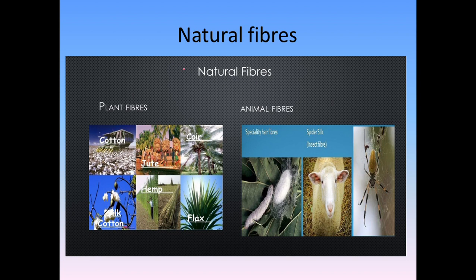Natural fiber — there are two types of natural fibers. The first is plant fiber and the other one is animal fiber. Examples of plant fibers are cotton, jute, hemp, and flax. For animal fibers, examples include spider web silk, silkworm silk, and wool.